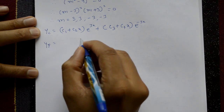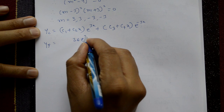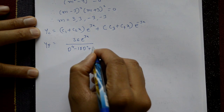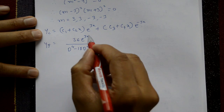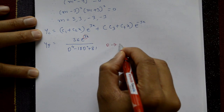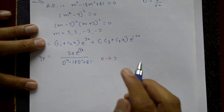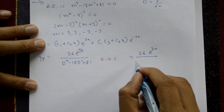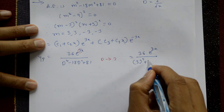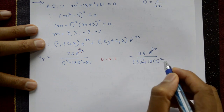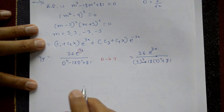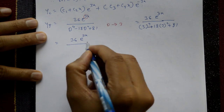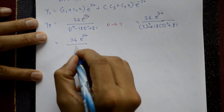Now the particular integral is: yp = 36e^(3x) / f(D), where f(D) = D⁴ - 18D² + 81. Using the exponential shift rule, put D = 3: 36e^(3x) / (3⁴ - 18·3² + 81). The denominator evaluates to 0, so we cannot use this directly.